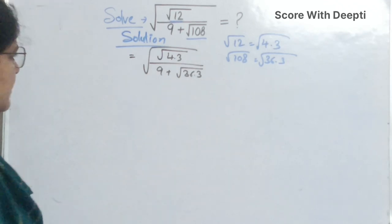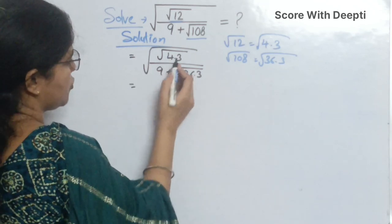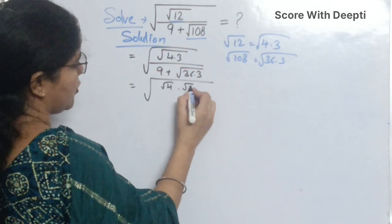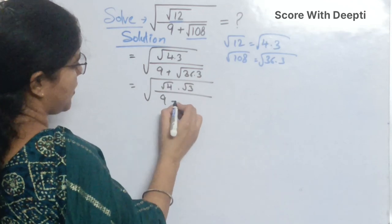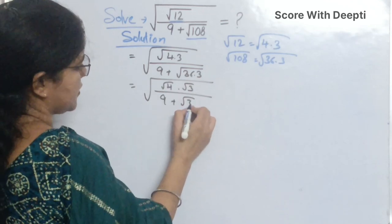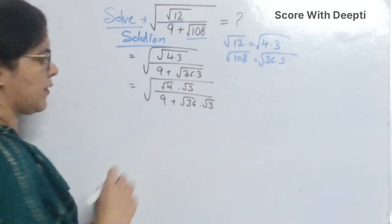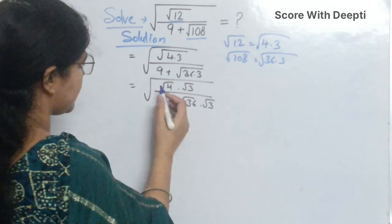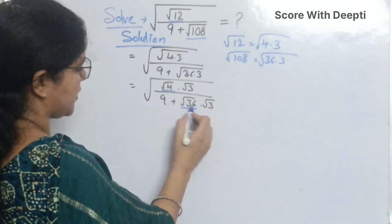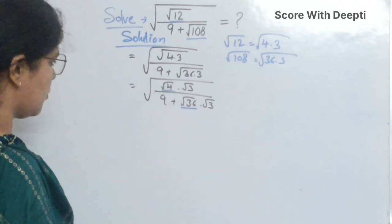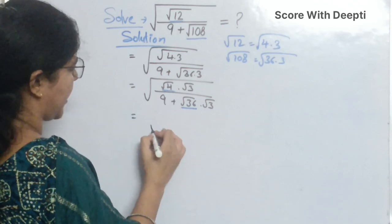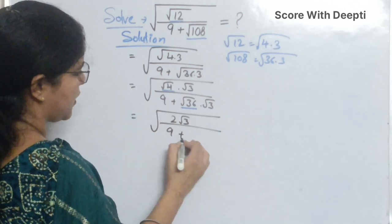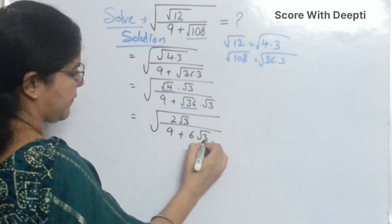Our next step: we separate these two terms and get square root of square root 4 into square root 3 over 9 plus square root 36 into square root 3. Next, square root 4 is equal to 2 and square root 36 is equal to 6. So we write square root of 2 square root 3 over 9 plus 6 square root 3.